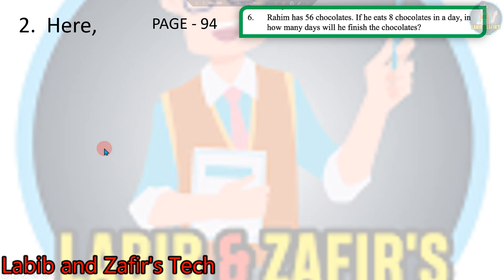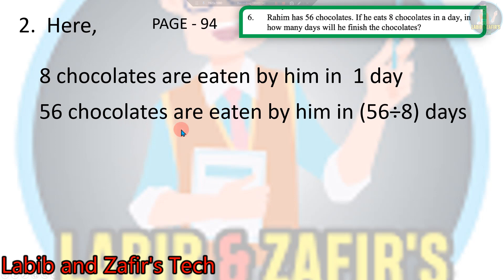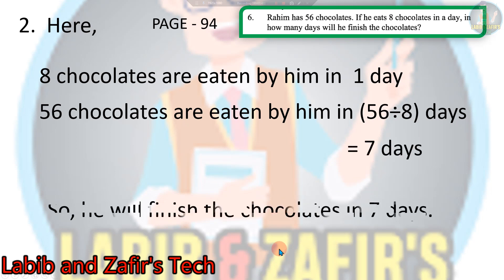Number 2: 8 chocolates are eaten by him in one day. We have to find in how many days he can finish 56 chocolates. So 56 chocolates are eaten by him in 56 divided by 8 days. That is 7 days. So he will finish the chocolates in 7 days. This is the answer to the second word problem.